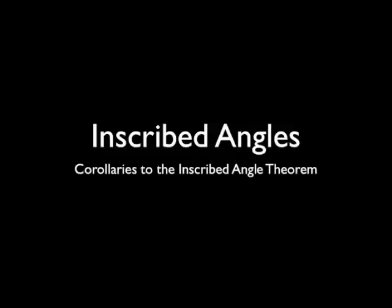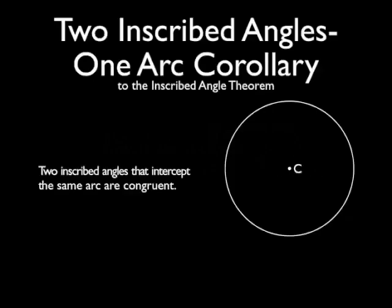There are several corollaries to the inscribed angle theorem. We're going to talk about three of them here. The first one is called the two inscribed angles, one arc corollary.